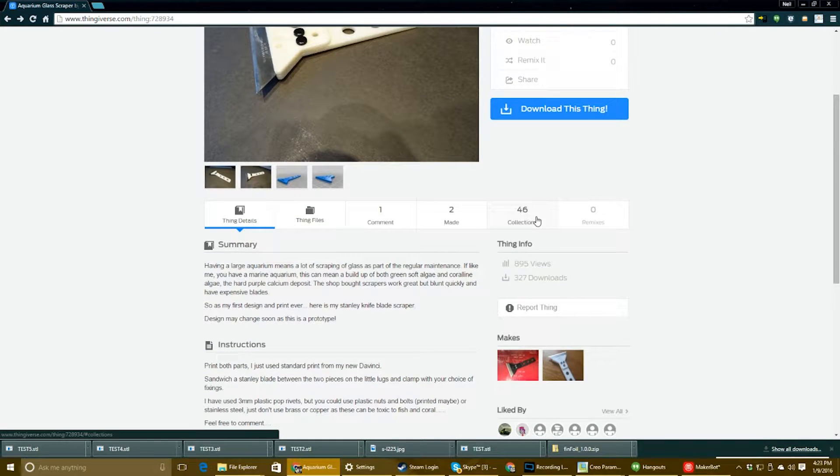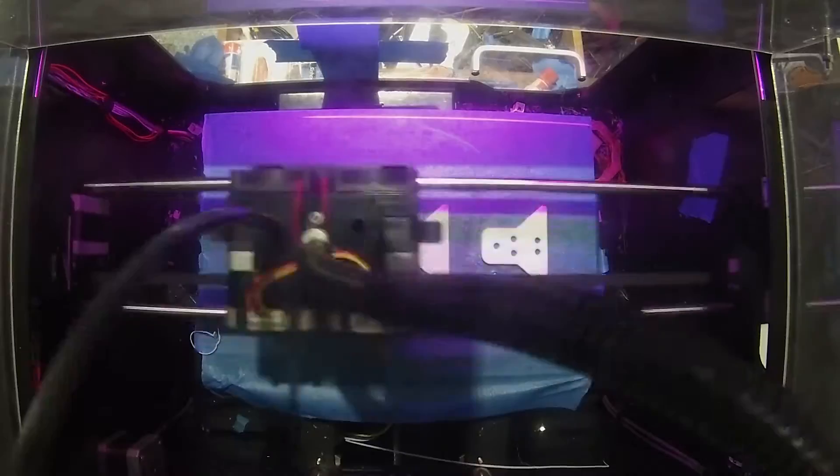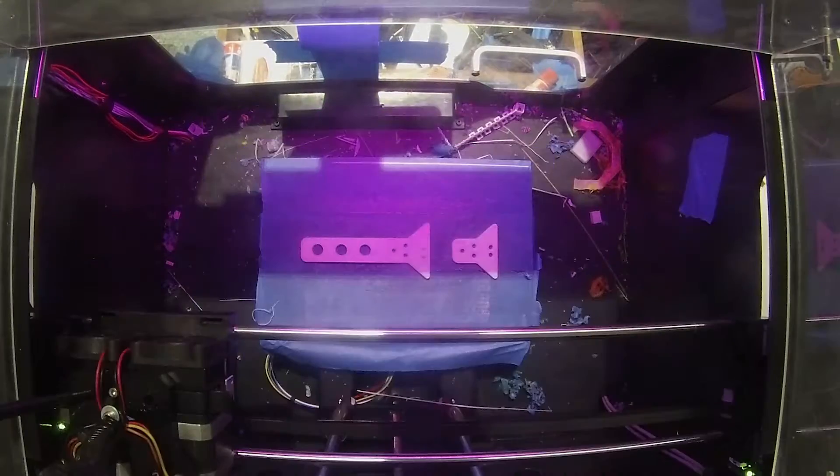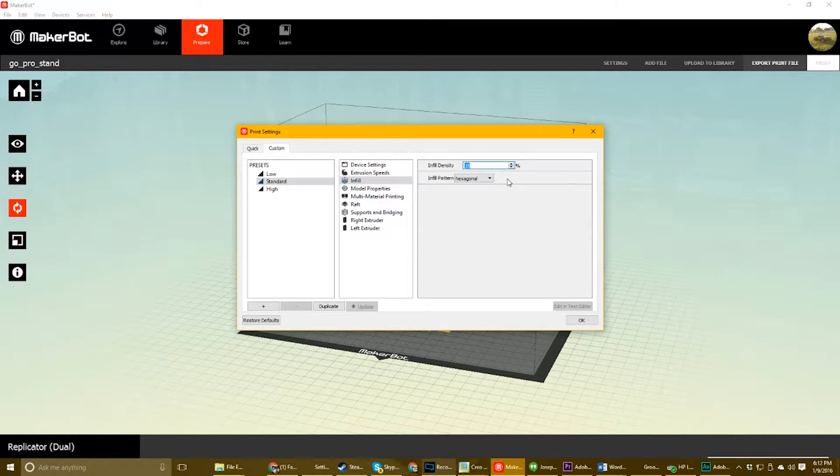In this video we will also put the scraper through some other tasks. Printing the object was relatively easy. I decided to use a 50% infill to ensure that the handle can withstand the forces being pushed into the glass. On most prints I use about 15% to 20% to save material, unless extra internal structure is needed.